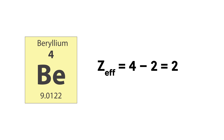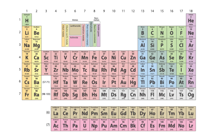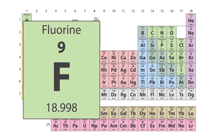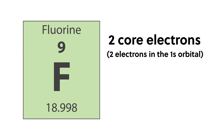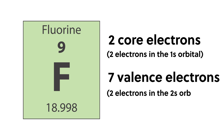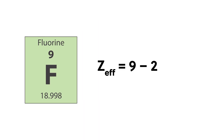Skipping across the periodic table from left to right to fluorine, we have the following scenario: an atomic number of 9, which means 9 protons, 2 core electrons in the 1s orbital, and 7 valence electrons — 2 in the 2s orbital and 5 in the 2p orbital. Assuming that the electron shielding can be approximated as the number of core electrons, we have ZF equals 9 minus 2 equals 7. So fluorine's effective nuclear charge for valence electrons is higher than lithium and beryllium.